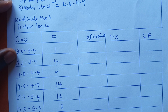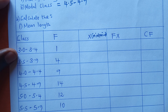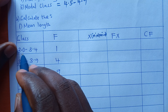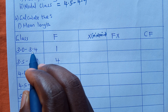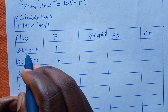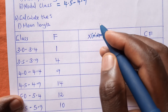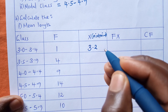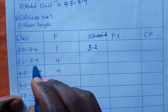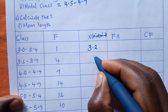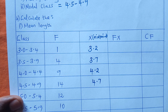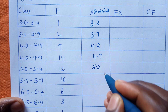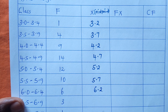To work out the midpoint, you first get the sum of the two boundary values. For example, 3.0 plus 3.4 gives 6.4, then divide by 2 to get 3.2. Doing the same for each class gives us midpoints: 3.7, 4.2, 4.7, 5.2, 5.7, 6.2, 6.7, and 7.2.